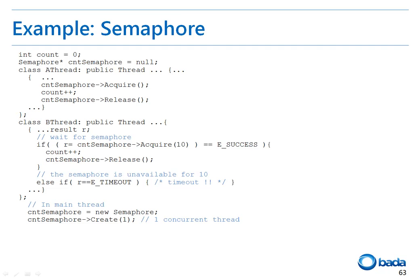When the function returns, it returns a value corresponding to success or not successful. If the return value is not successful, the corresponding operation is to be performed since it indicates that acquiring the semaphore has failed. If the return value is successful, the thread can access the shared resource since it indicates that the semaphore has been acquired.